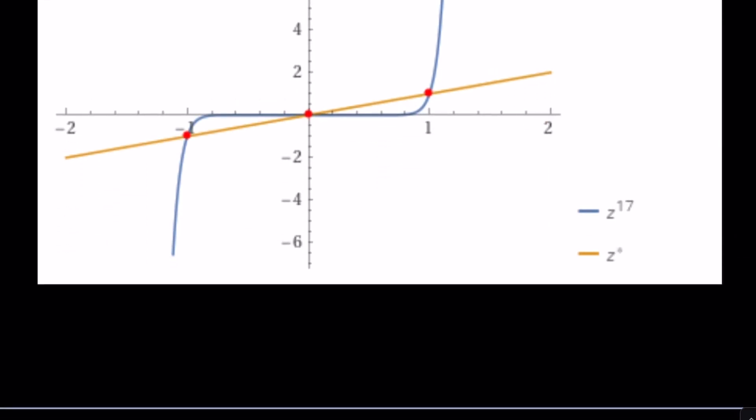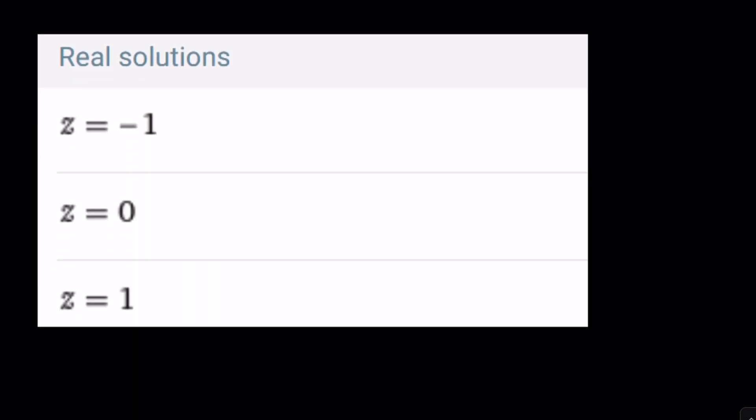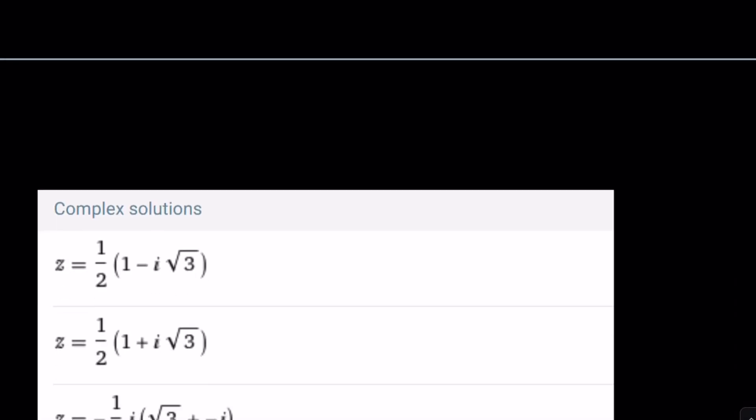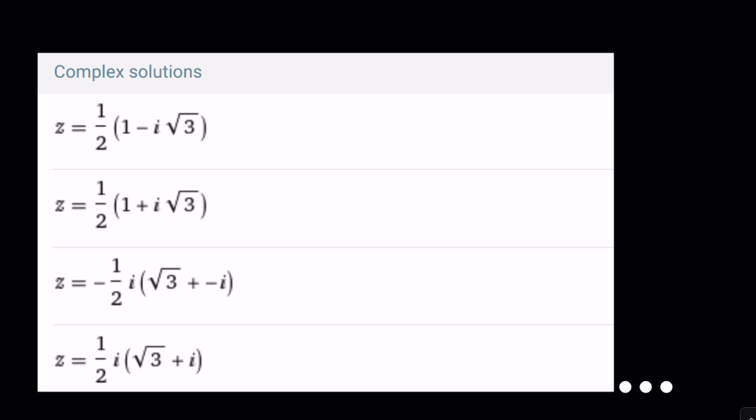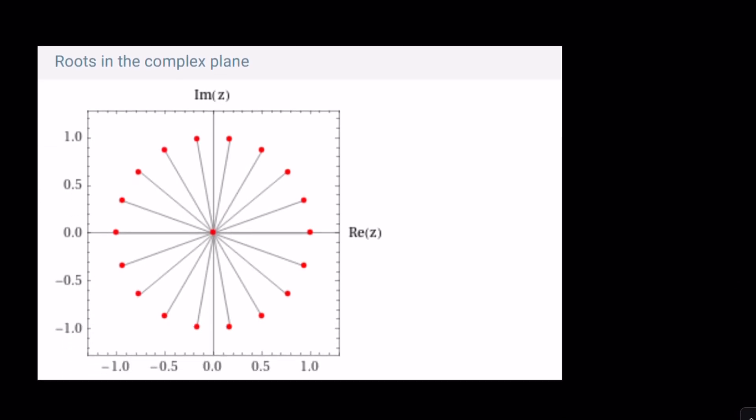And before we finish the video, I want you to take a look at the graph of this. Obviously, this is for real solutions only. You can see 0 is in the middle. And then three real solutions. And here's the interesting one, the complex solutions. But there are more. If you click on more roots, it'll give you Wolfram Alpha. And doesn't this look beautiful? The roots in the complex plane. And this brings us to the end of this video.